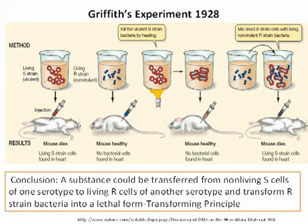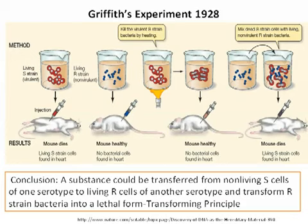This slide shows us the famous Griffith's experiment. Living R-strain and heat-killed S-strain pneumococci are not virulent for mice, while living S-strain is lethal. In 1928, Griffith reported that mice unexpectedly died after being injected with a mixture of living R-strain and heat-killed S-strain bacteria. Griffith was also able to recover infectious type 2 S pneumococci from the hearts of the dead mice, indicating that the changes were heritable. Griffith hypothesized that a substance could be transferred from non-living S-cells of one serotype to living R-cells of another serotype and transform R-strain bacteria into a lethal form, which was named the transforming principle.